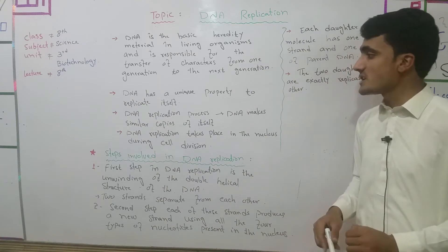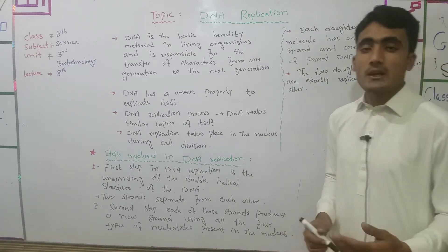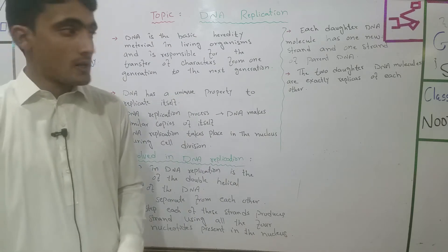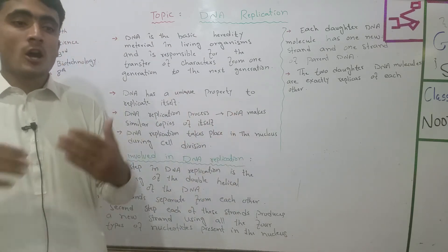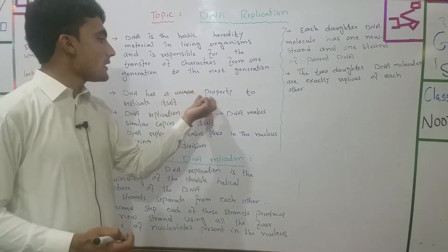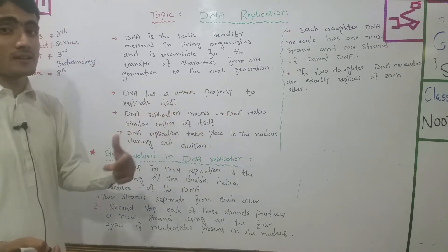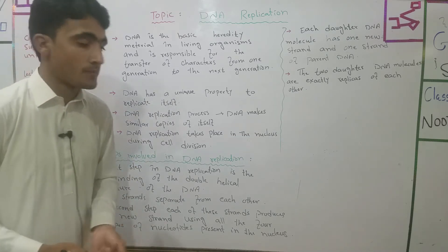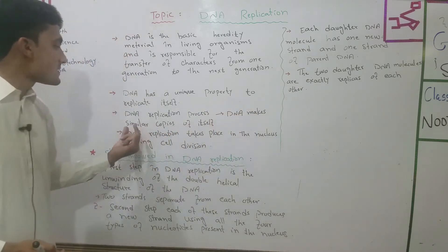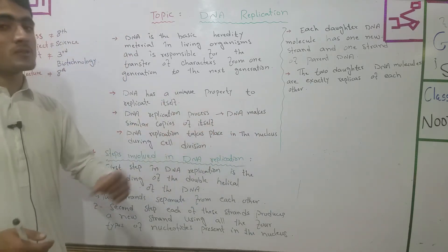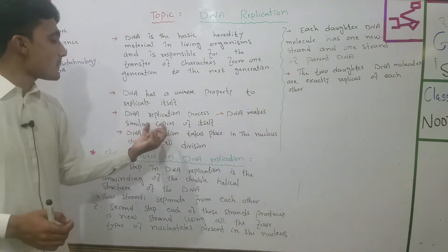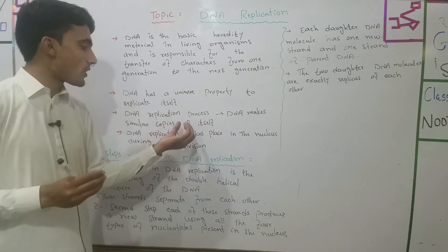DNA has a unique property to replicate itself. In the DNA replication process, DNA makes similar copies of itself — just like making a photocopy of a document.